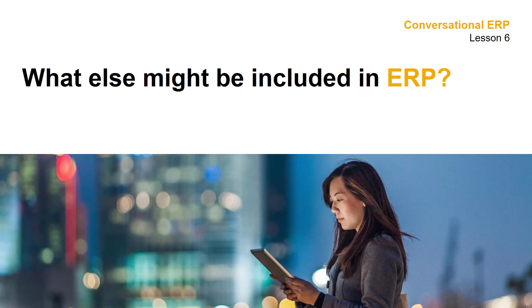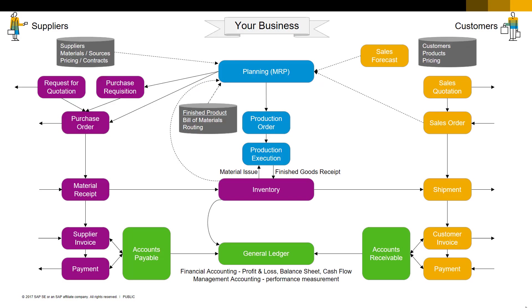Lesson 6: What else might be included in ERP? Here is our map of our business and of our ERP system that we developed together back in Lesson 1. It's a good map and it shows all the major business processes we want to talk about, but it is by no means a complete map.